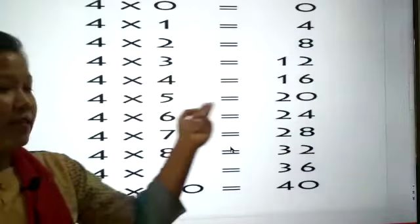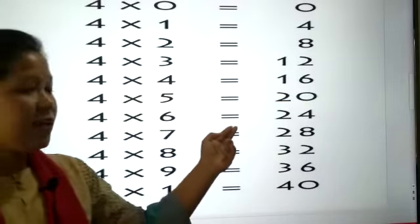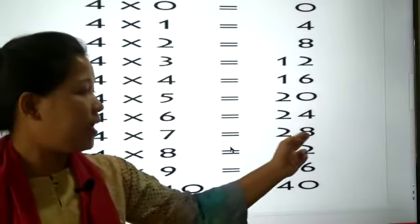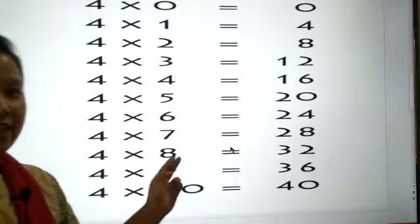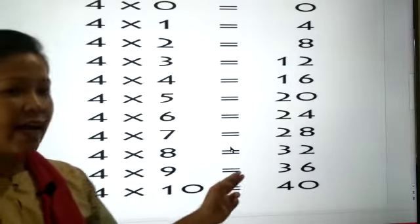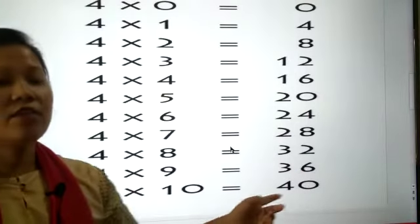4 5s are 20, 4 6s are 24, 4 7s are 28, 4 8s are 32, 4 9s are 36, and 4 10s are 40.